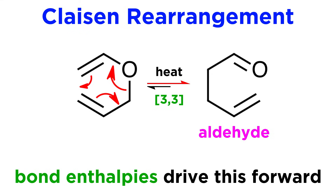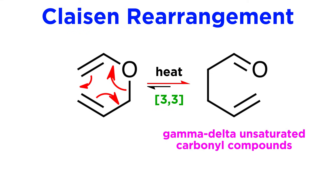This variation is called the Claisen rearrangement, and it is a great way to synthesize gamma-delta unsaturated carbonyl compounds, where we are counting up the Greek alphabet from the carbonyl carbon — alpha, beta, gamma, delta — with the other pi bond in the product sitting between the gamma and delta positions.